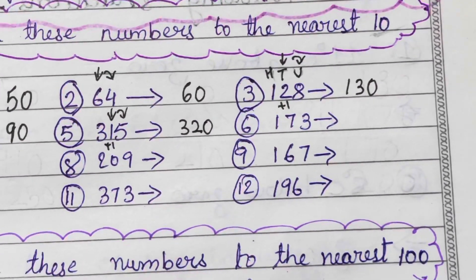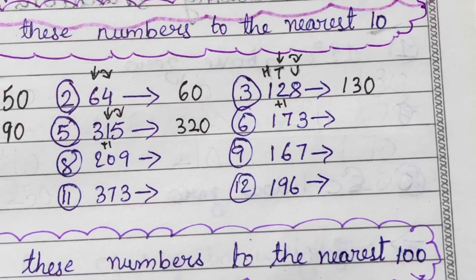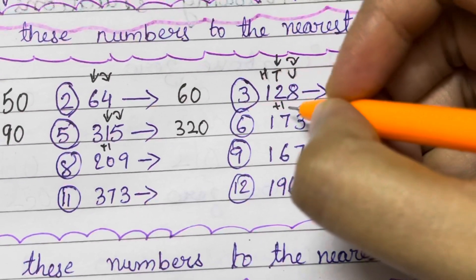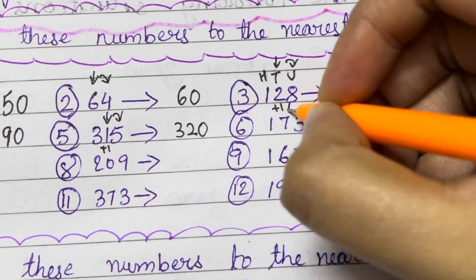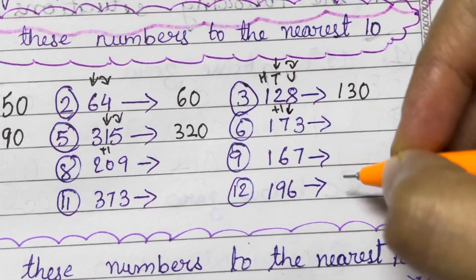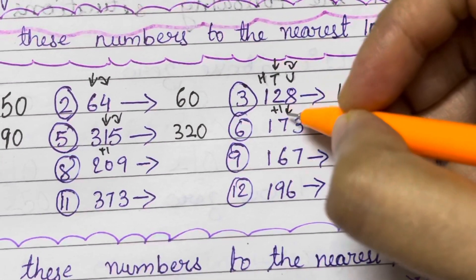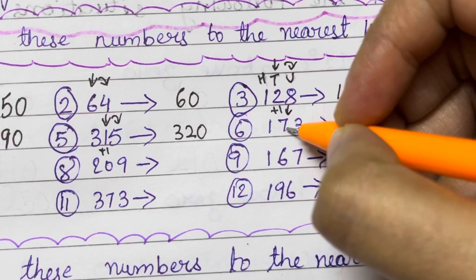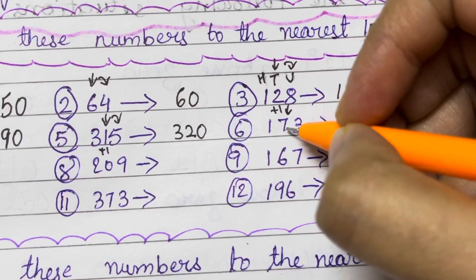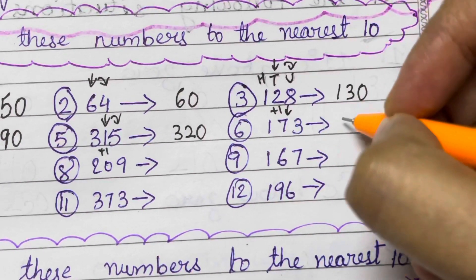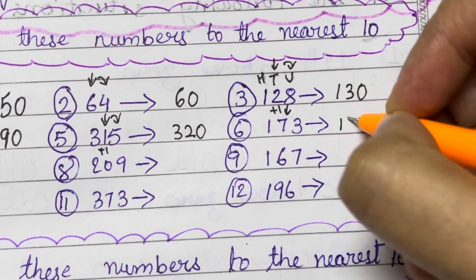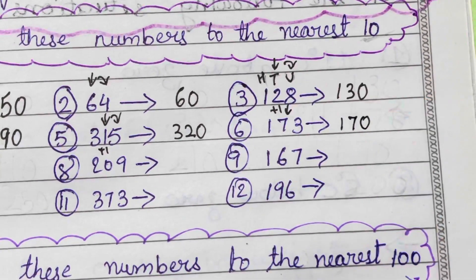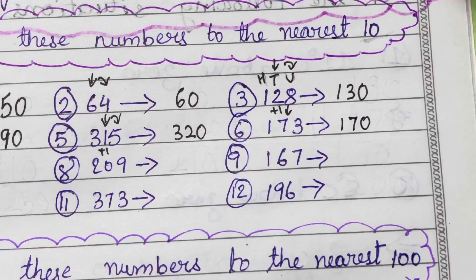Now for 173. The tens place is 7. The digit after that is 3, which is less than 5. So the number in the tens place is not going to change. So 1, 7 remain, and 3 is replaced by 0. That is 170.